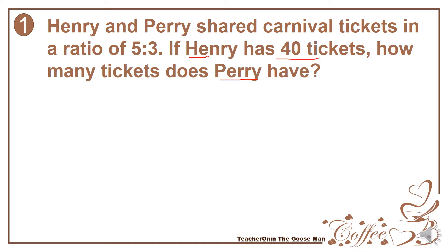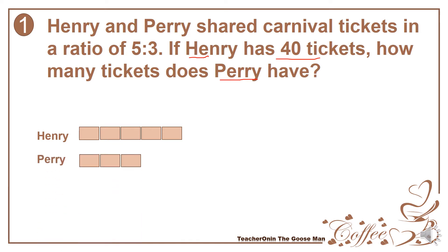We will represent 5 parts for Henry and 3 parts for Perry since the ratio is 5 to 3. Meaning to say, we have 5 parts for Henry and 3 parts for Perry. Since Henry has 40 tickets, we will write here 40, and we want to find out the number of tickets for Perry, so we will write here a question mark.